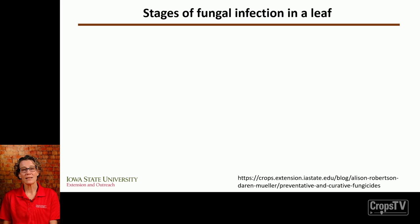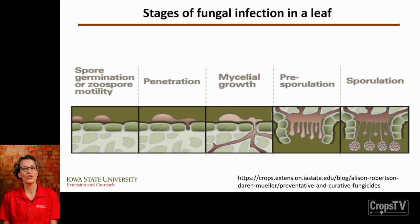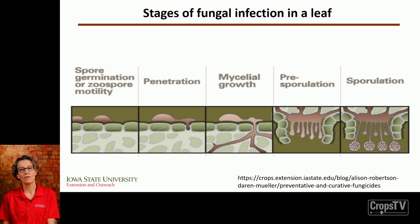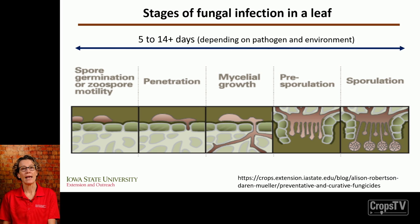Now let's talk about infection in a leaf and relate those fungicides to how a fungus infects a leaf. Generally, a spore lands on the surface of a leaf, germinates producing a germ tube, and then forms an appressorium. From there, the fungus produces a penetration peg that penetrates through the epidermis into the mesophyll cells, where the fungus grows mycelium and colonizes those cells. Eventually the fungus produces a fruiting structure and sporulates.